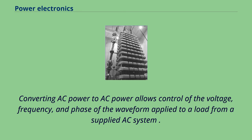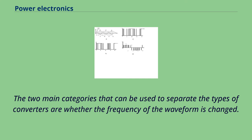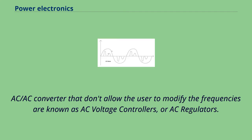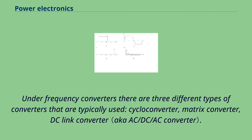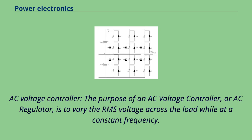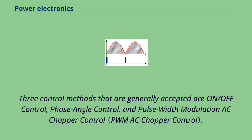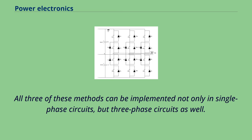Converting AC power to AC power allows control of the voltage, frequency, and phase of the waveform applied to a load from a supplied AC system. The two main categories are whether the frequency of the waveform is changed or not. AC-AC converters that don't allow the user to modify the frequencies are known as AC voltage controllers or AC regulators. AC converters that allow the user to change the frequency are referred to as frequency converters. Under frequency converters, there are three different types: cycloconverters, matrix converters, and DC-link converters. The purpose of an AC voltage controller is to vary the RMS voltage across the load while maintaining a constant frequency, using on/off control, phase angle control, or pulse-width modulation AC chopper control—all implementable in single-phase and three-phase circuits.